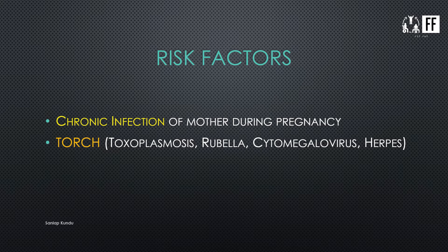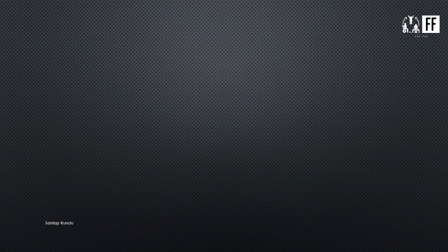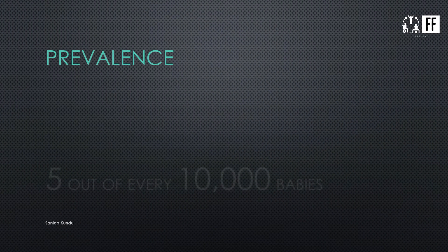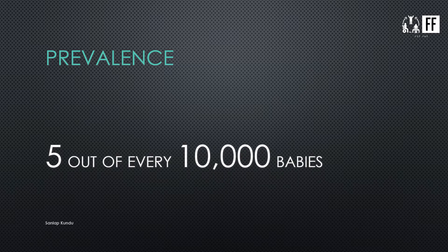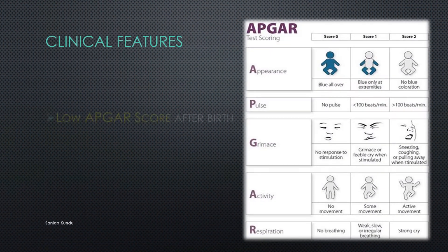The risk factors of TOF include chronic infection of the mother during pregnancy — TORCH infection, which includes toxoplasmosis, rubella, cytomegalovirus, and herpes infection — preterm delivery, mother's age greater than 40 years, and if the mother is suffering from phenylketonuria. The prevalence of this disease is 5 out of every 10,000 babies.